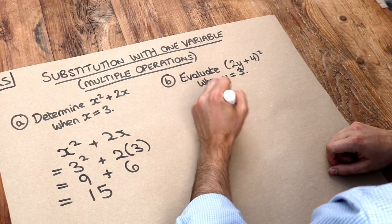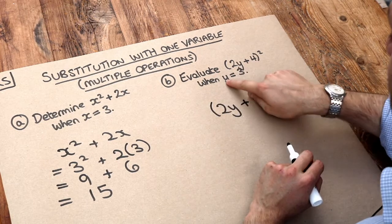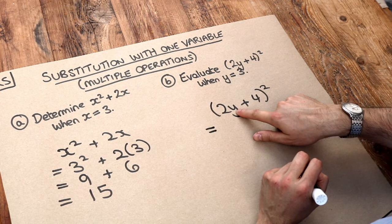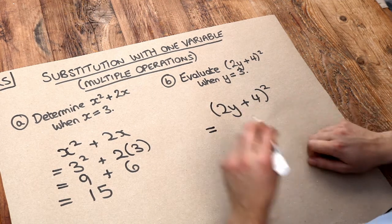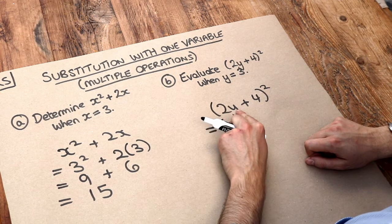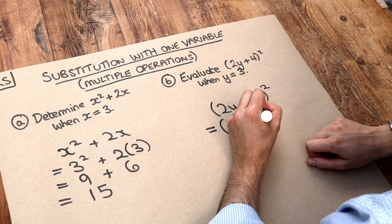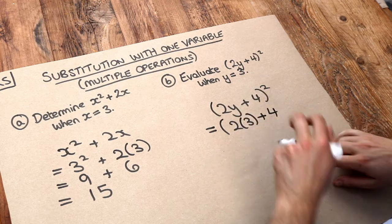What about this next one? We've got 2y plus 4 squared, and in this question the value of y is 3, so we need to replace each occurrence of y in the expression with 3. Now 2y means 2 times y, so I could write 2 times 3, but again I prefer to write it with a bracket instead. That just means 2 times 3.